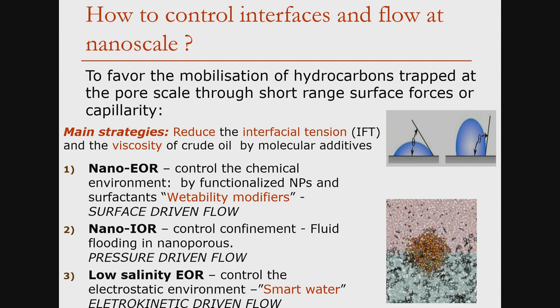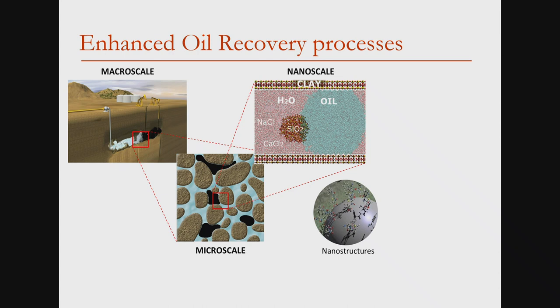There are two main ways to control interfaces in flow: reduce the interface tension, or reduce the viscosity. In the particular case of oil, there are several strategies. One is changing the chemical environment to control wettability. Another is controlling the confinement through pressure-driven flow. Finally, you can control the electrostatic environment, creating an electrokinetic driving flow. What I'll show is that using multi-scale molecular simulations, you can predict how much oil can be displaced across these scales.